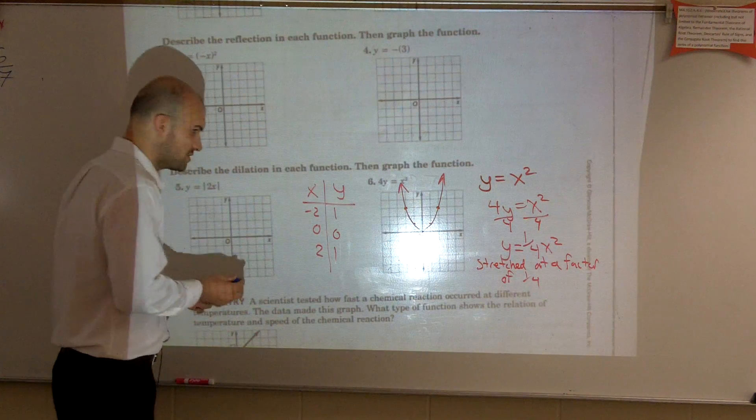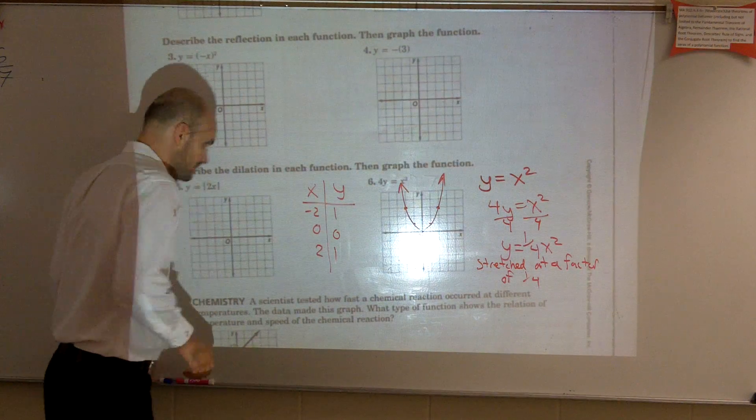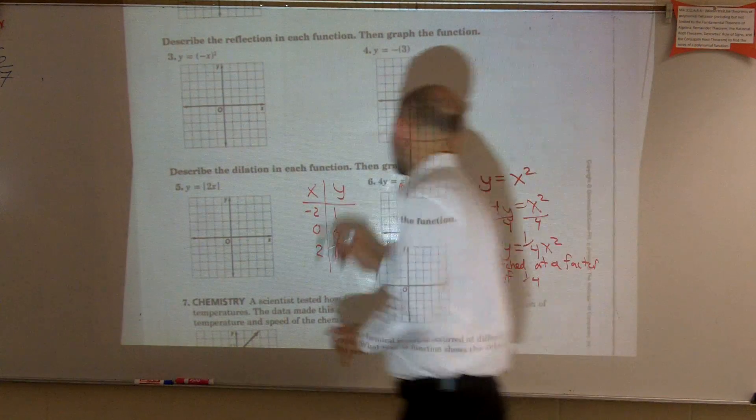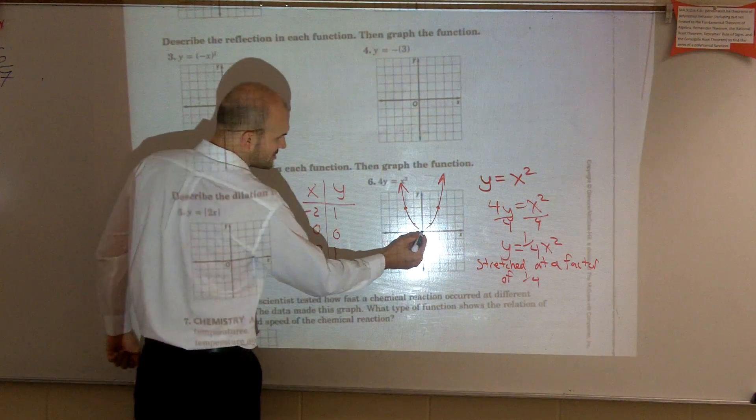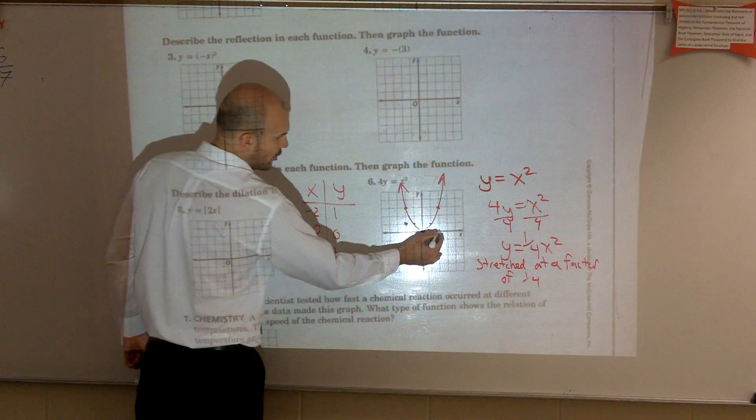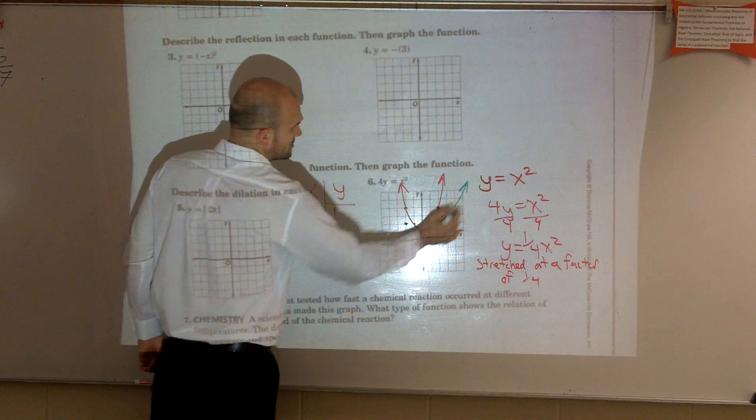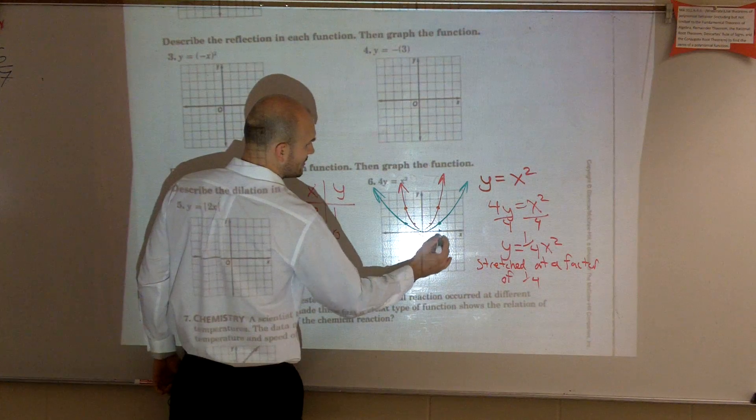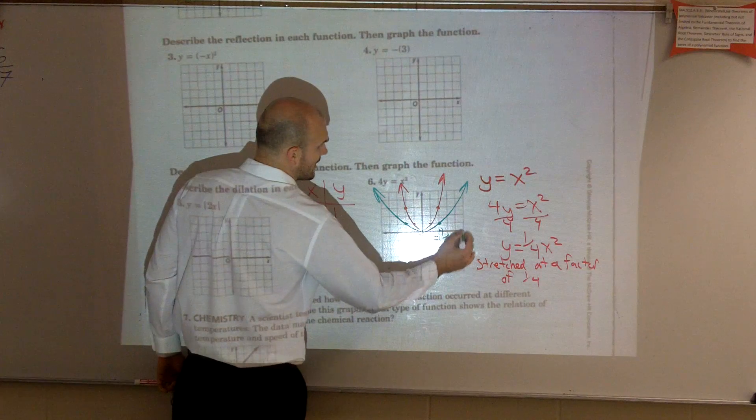So my new function, so now I just plot these points. So my new function still goes there, but when I go over to negative 2, I go to 1, and I go to over 2, I go up 1. So my new function is going to look something like this,